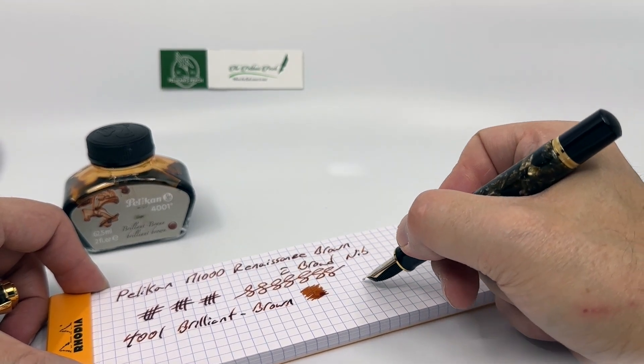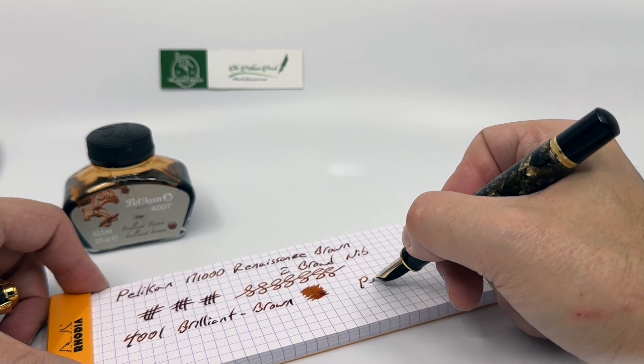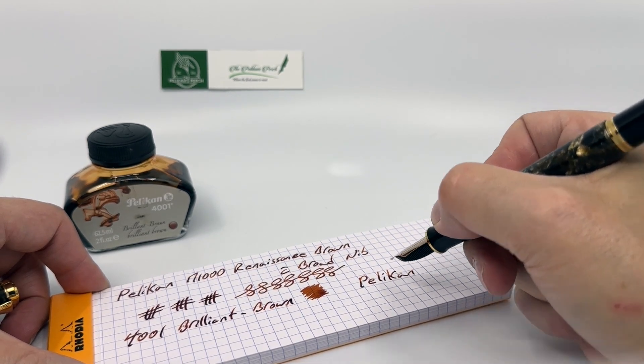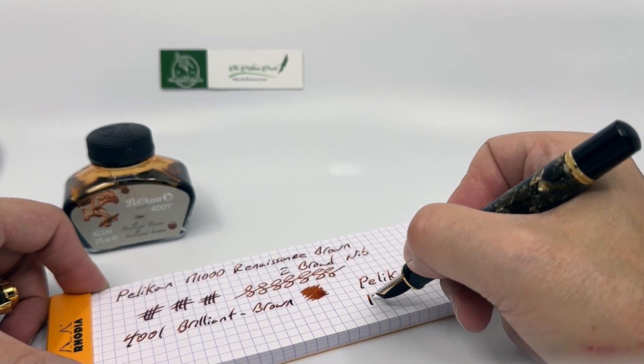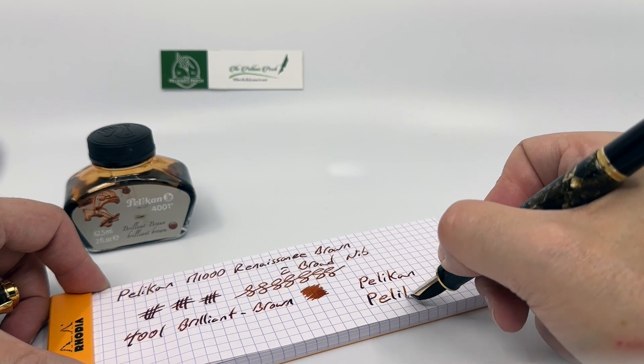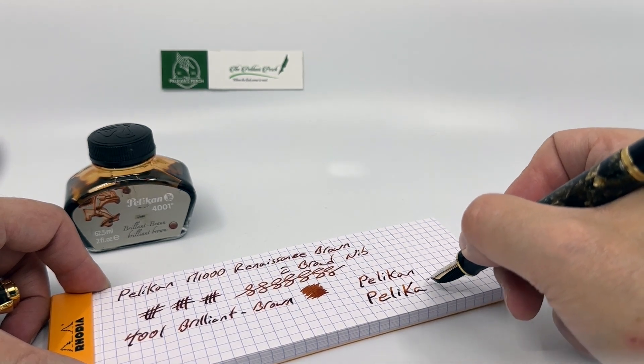Now, if you write very lightly, you definitely get shading. But if you put a little pressure to the writing, you can get quite a bit more, and it can put down quite a bit of ink.